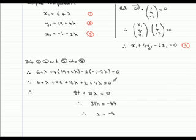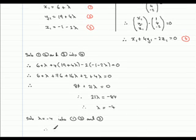And with this value, I can substitute that back into 1, 2, and 3 to get x1, y1, z1. So we'll sub lambda equals negative 4 into 1, 2, and 3. Therefore, we have that x1 equals 6 plus lambda, which is negative 4, that's 2. y1 will equal 19 plus 4 times negative 4, that's negative 16. 19 minus 16 is 3. And then z1 equals negative 1 minus 2 times minus 4, that would be plus 8, minus 1 plus 8, that would be 7.